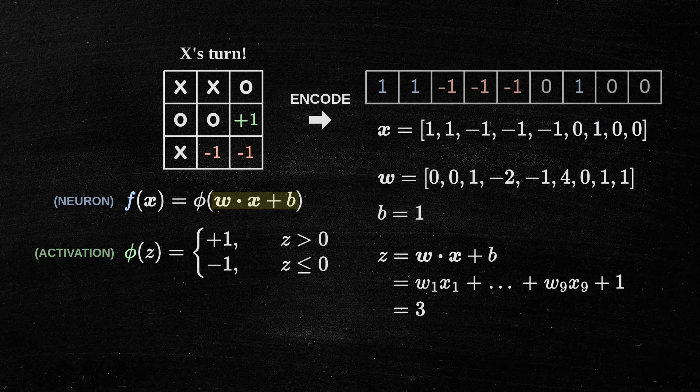So, if the sum after the dot product and bias is three, the activation function will indeed return positive one, representing the correct answer in this example.